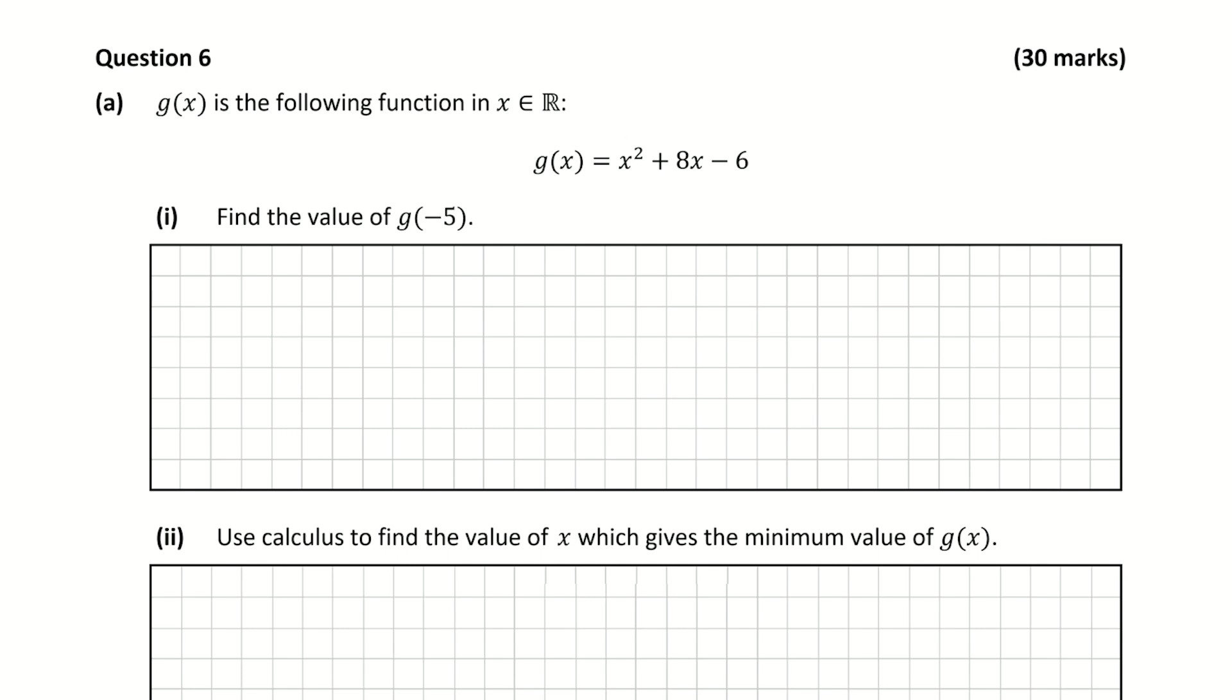We're told in question a that g(x) is the following function: g(x) equals x squared plus 8x minus 6, and we're asked to find the function of g(-5). So we can see here the difference between g(x) and g(-5). X is replaced by minus 5. So what they're basically asking us to do is fill out this function for x equals minus 5.